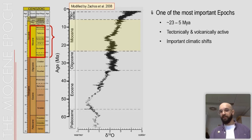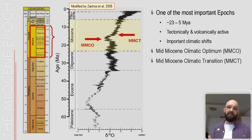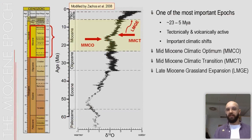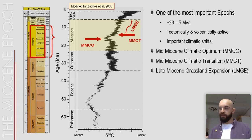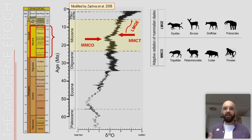The Miocene constitutes one of the most important epochs of the Cenozoic due to its high tectonic and volcanic activity, which led to some very important climatic shifts. One of the most important is the so-called mid-Miocene climatic optimum, which constitutes the warmest time interval of the last 23 million years. This optimum was followed by a short cooling period known as the mid-Miocene climatic transition.